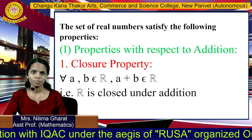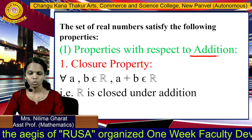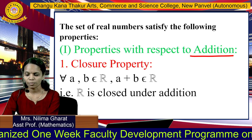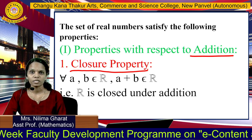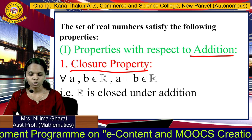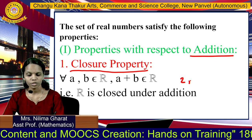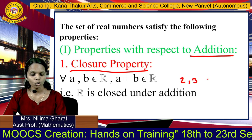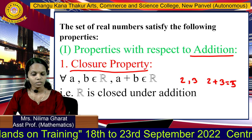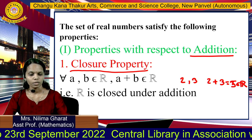The set of real numbers satisfies the following properties. First are properties with respect to addition. The first property is the closure property: if we take any two real numbers A and B, their sum is also a real number. For example, 2 and 3 are real numbers and 2 plus 3 equals 5, which also belongs to R. That is, R is closed under addition.